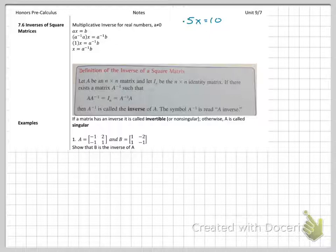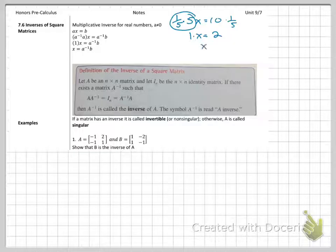What's the inverse of 5? It's 1 over 5. If I multiply both sides by 1 over 5, this becomes 1, and then that side becomes 2, and now we know x equals 2.